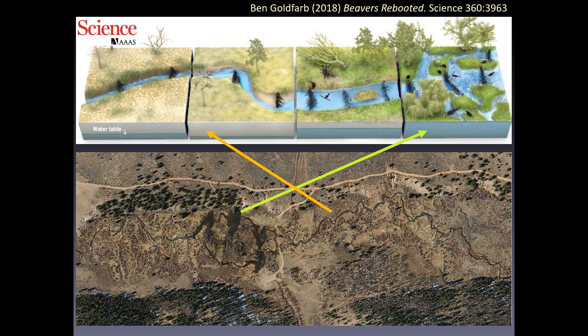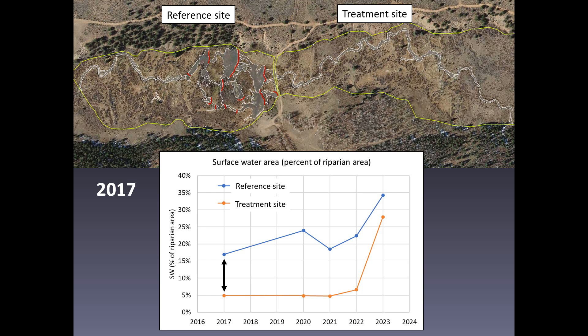Here's our site with the stream flowing right to left. The upstream part above the central road is a reference where beavers are currently present, corresponding to the right side of Ben's diagram. The downstream part, where beavers are absent, corresponds to the degraded condition on the left — this is the site we targeted for restoration. The aerial photo shows the extent of surface water mapped in white, and the red lines are beaver dams. The graph shows surface water area expressed as the percentage of total riparian area over the time that monitoring has been conducted.